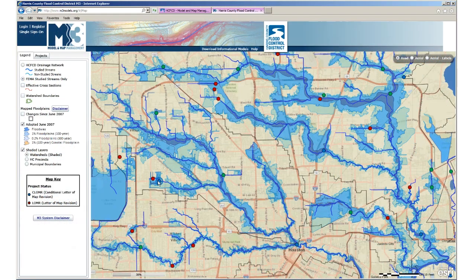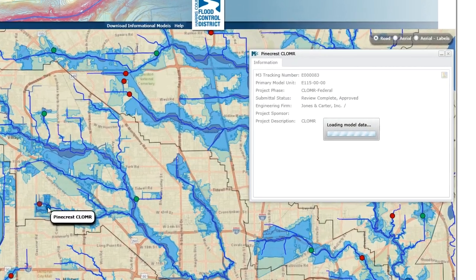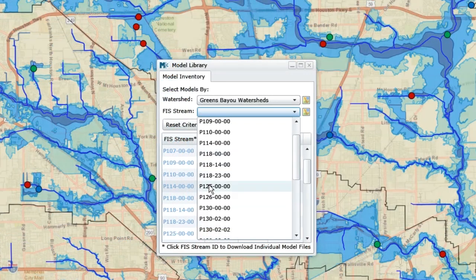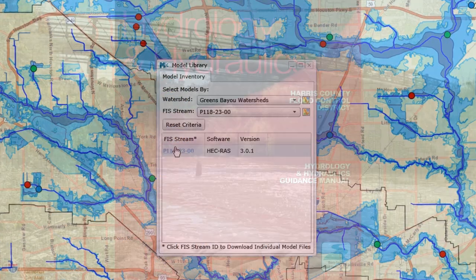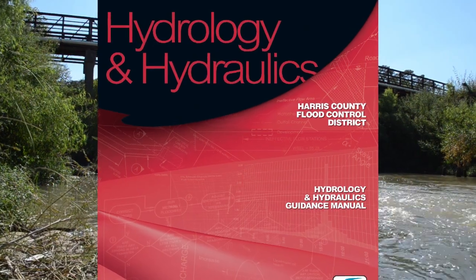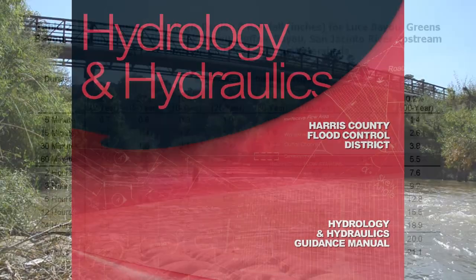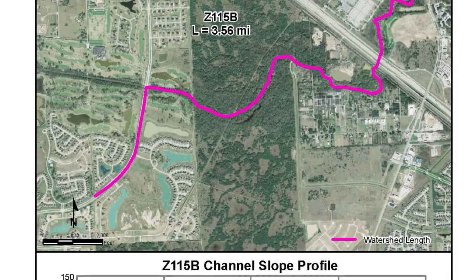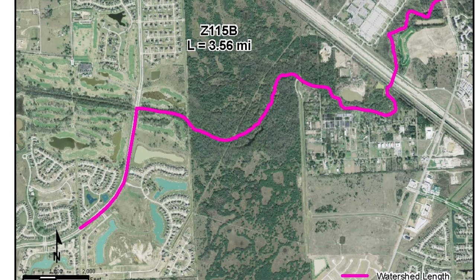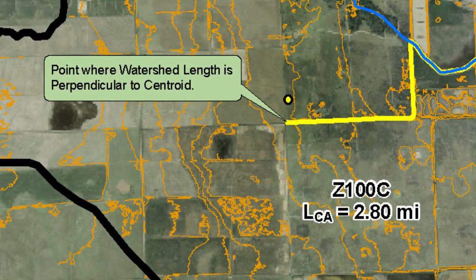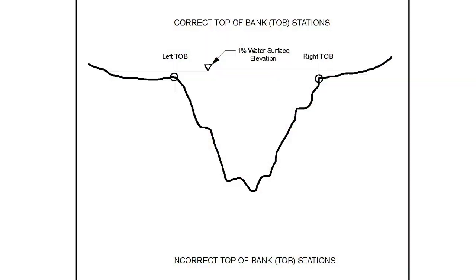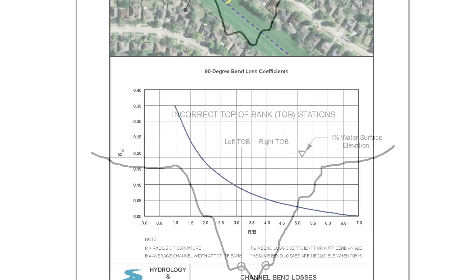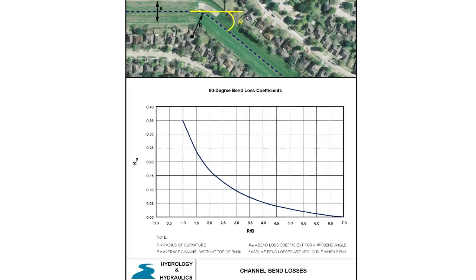If an engineer wants to complete a drainage study or change the limits of the effective floodplain, a project ID is created and can be tracked in the M3 system for all others to see. Additionally, the Flood Control District published the Hydrology and Hydraulics Guidance Manual in 2009 to document the technical details of H&H modeling in Harris County. This manual provides engineers the complete technical background on how to correctly develop or modify H&H models.